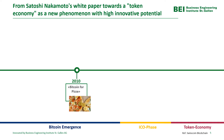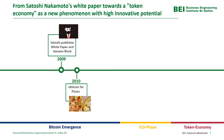To better understand this new phenomenon of tokenization, it helps to look back at the history of Bitcoin, blockchain and distributed ledger technology. A special event in our timeline was in 2010: the Bitcoin-for-pizza transaction, where somebody in an internet forum offered to deliver a pizza in exchange for 10,000 Bitcoins — which would be unimaginably expensive today. This marked the start of the peer-to-peer electronic cash system invented by Satoshi Nakamoto, with the Genesis block starting in 2009.